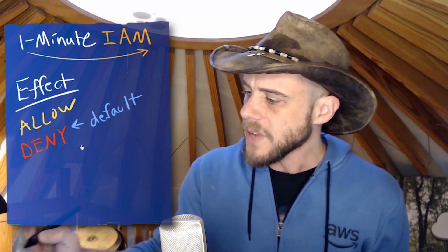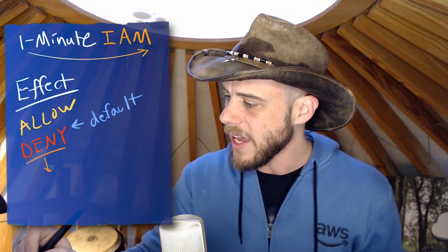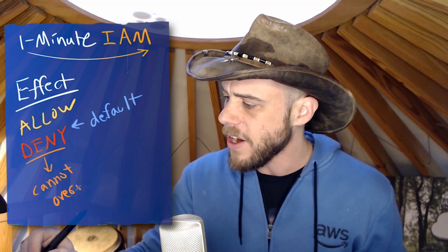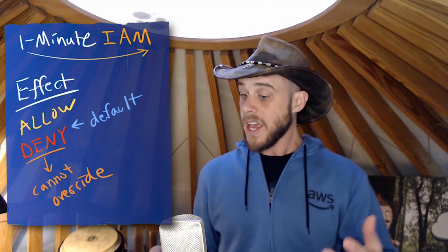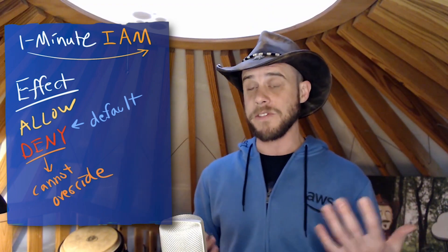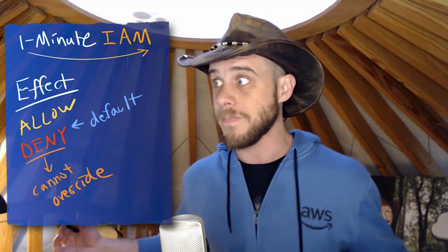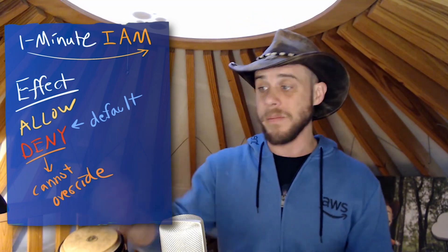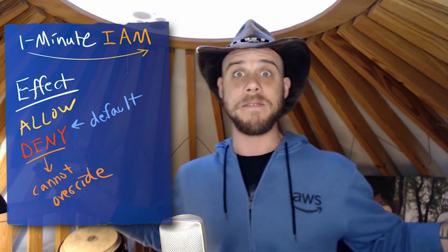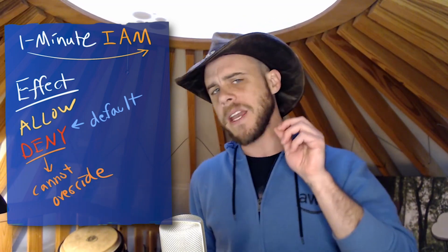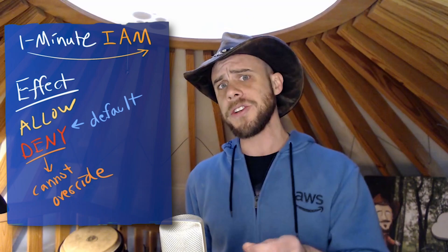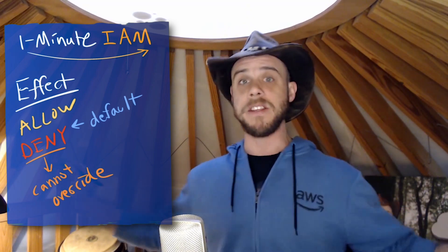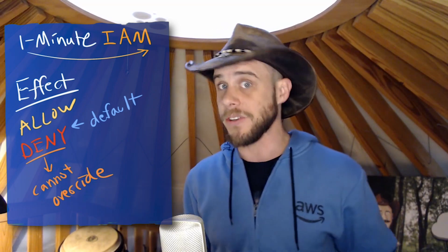The other thing to recognize is that if you are using a deny statement, it cannot be overridden. This is very important because later on as you're writing policies and considering the implications of somebody granting additional privileges — maybe accidentally — all it takes is adding a new policy that might grant with an allow statement, and all of a sudden you might have a security situation on your hands. By using a deny statement, you can ensure that that particular action can never be allowed anywhere else in the resulting set of permissions for that particular identity.